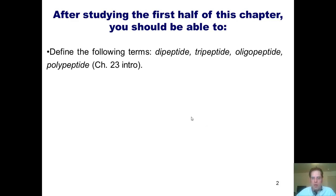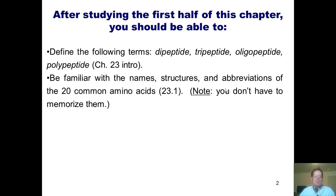First, define the following terms: dipeptide, tripeptide, oligopeptide, and polypeptide. Be familiar with the names, structures, and abbreviations of the 20 common amino acids. Now note, for this class you will not have to memorize them.